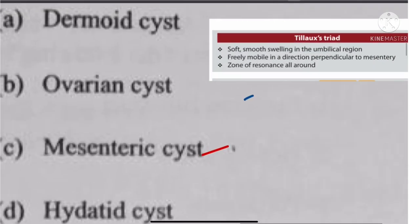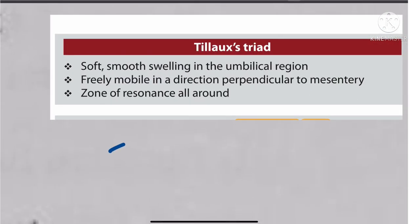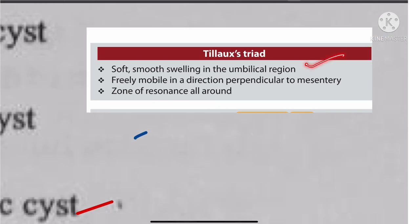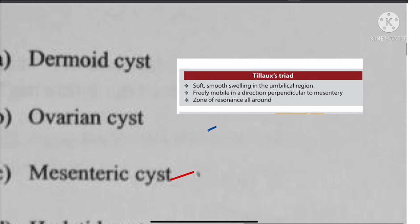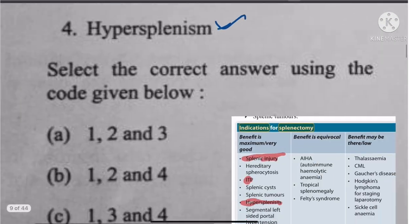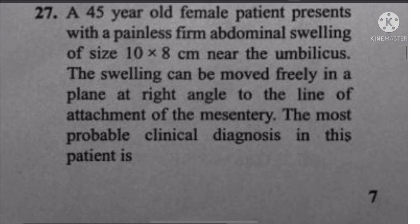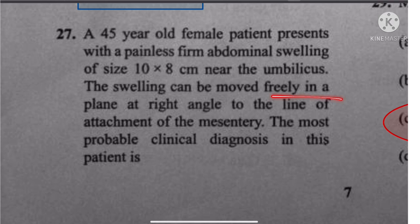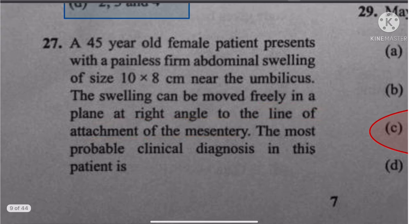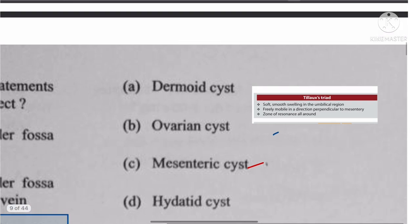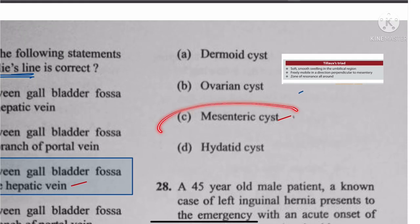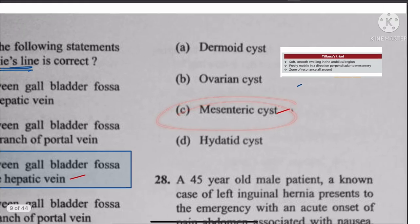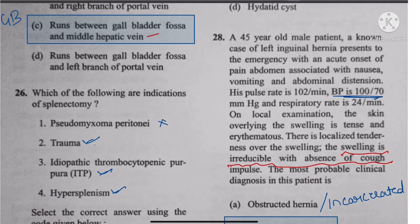Question 27: History describes a smooth swelling in the umbilical region, freely mobile perpendicular to the mesentery, zone of resonance all around, and freely movable in the line of attachment of the mesentery. These findings are consistent with a mesenteric cyst.